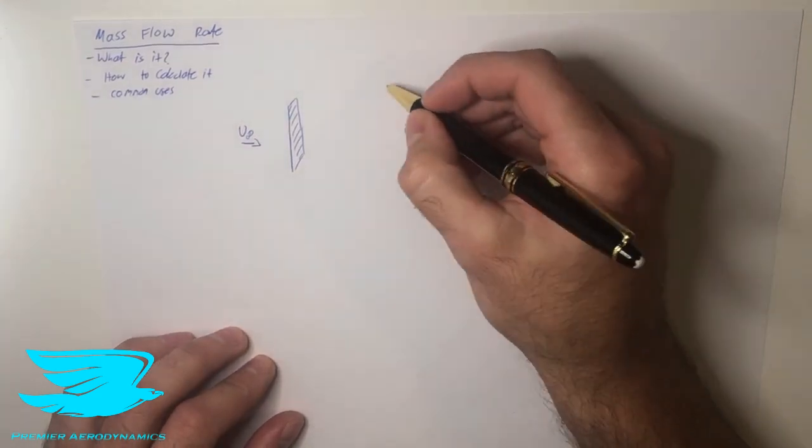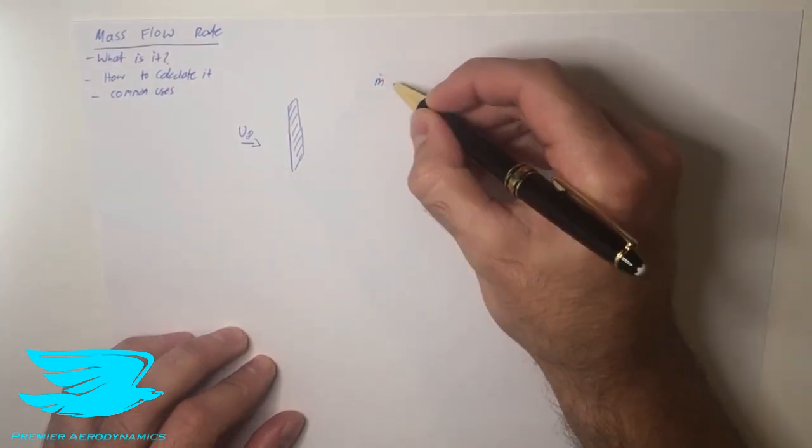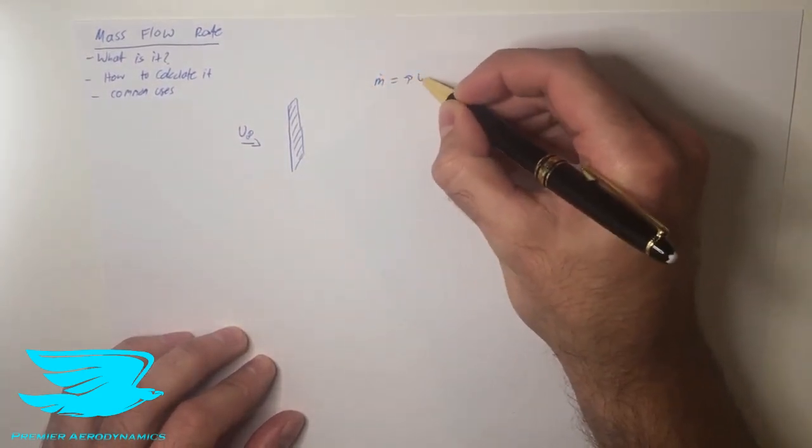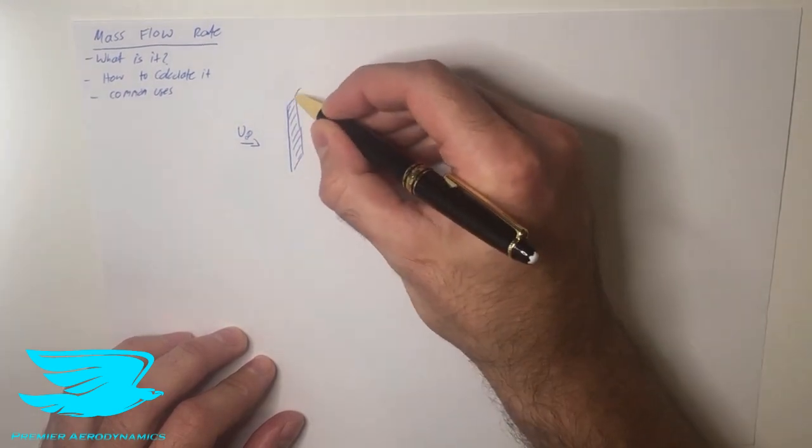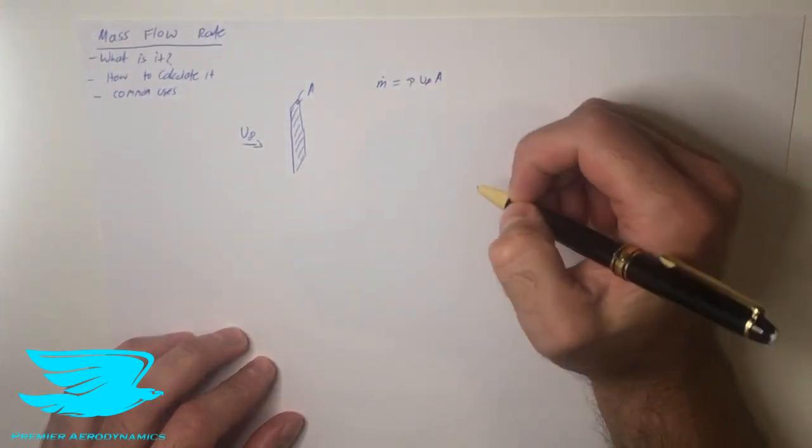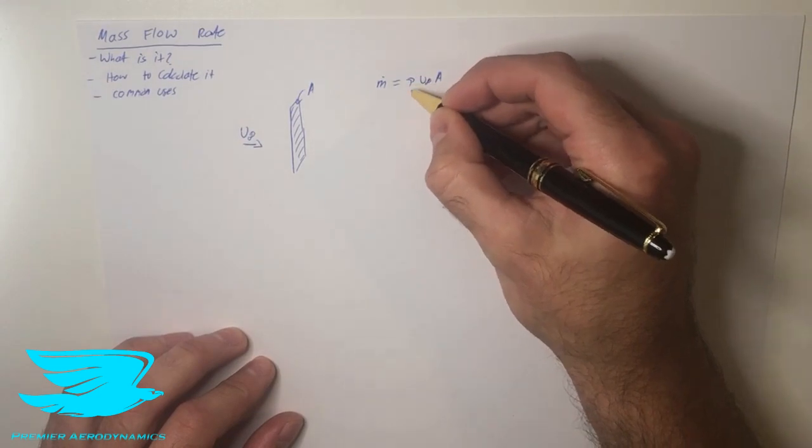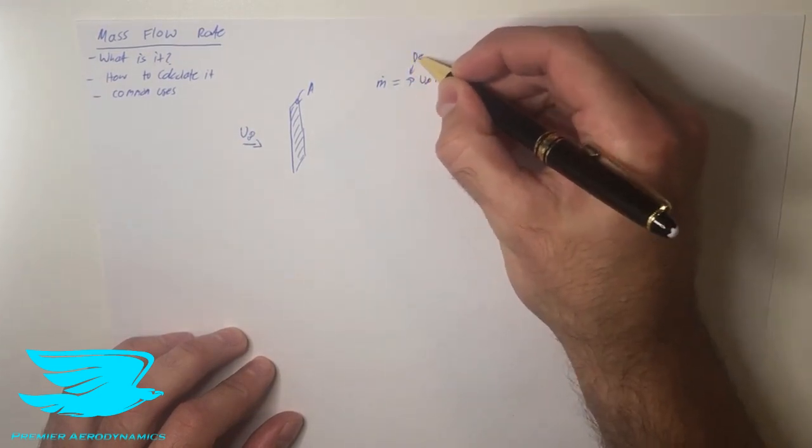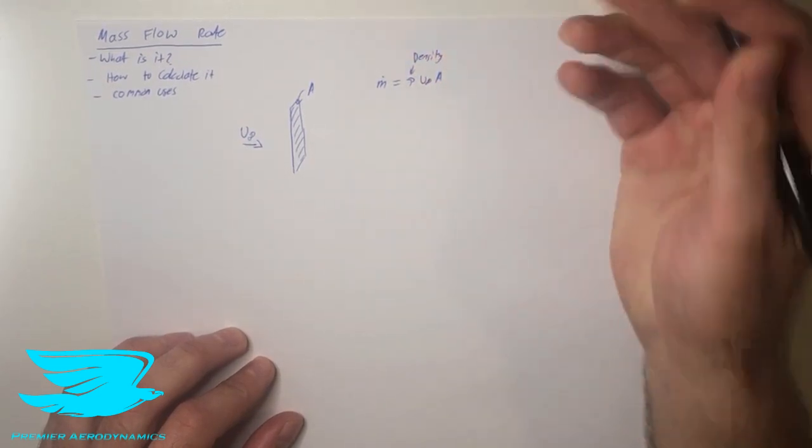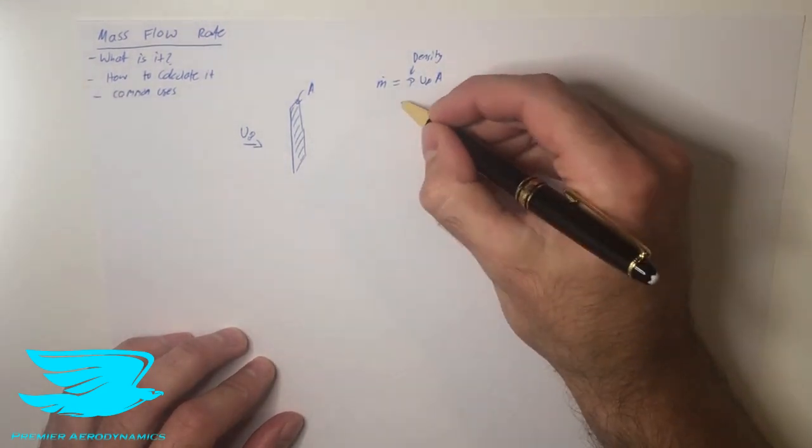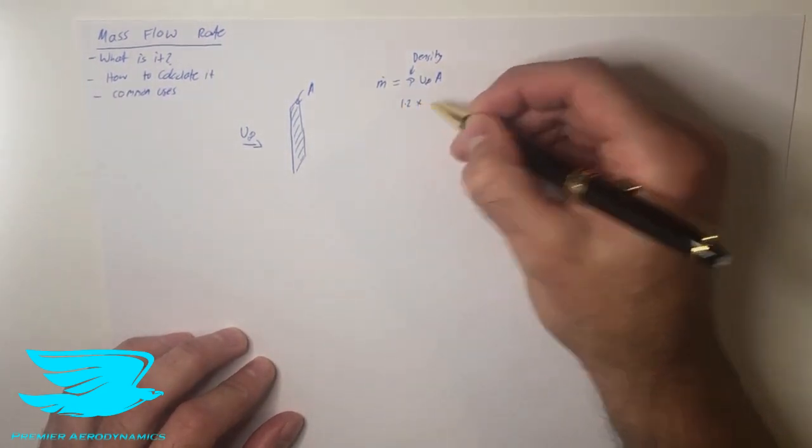So how do we calculate it? The mass flow rate, which is denoted by m dot, equals rho u infinity times the area, and this is the area of this face here. So if we have the density which is rho here, this is the density of whatever fluid you're using, so I'm going to say air, so that's approximately 1.2 kilograms per meter cubed, but it may not be, it may be a little bit different.